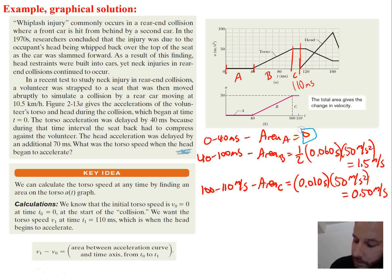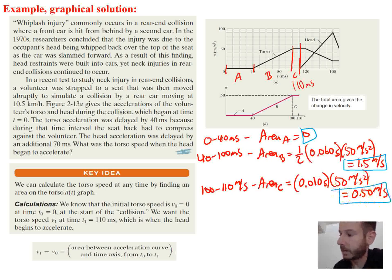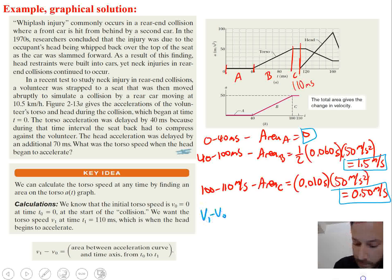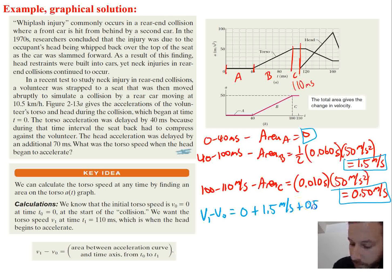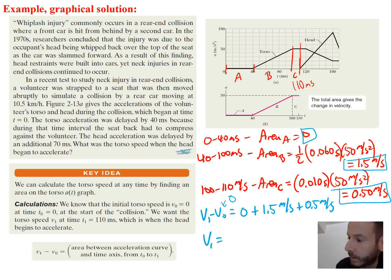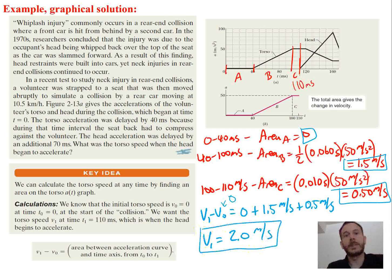We take the area values — 0, 1.5 meters per second, and 0.5 meters per second — and add them together to find our change in velocity. Since V₀ started at zero, V₁, which is the torso speed when the head starts to accelerate, is 2.0 meters per second. And that's all for this chapter.